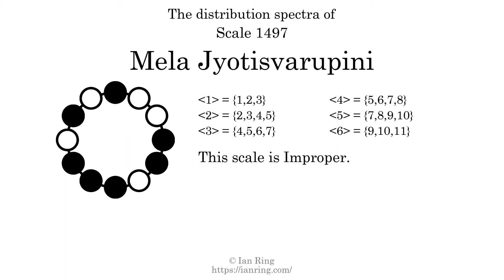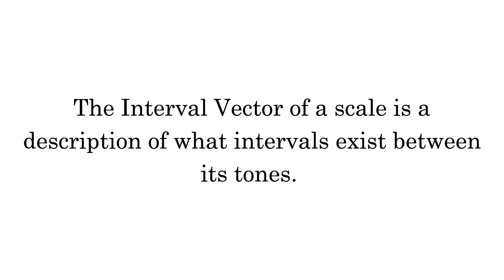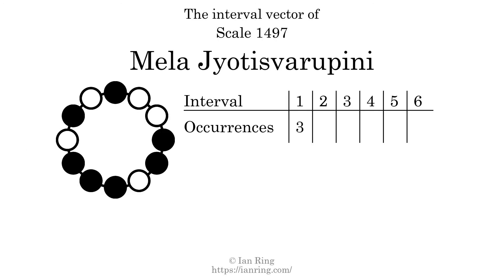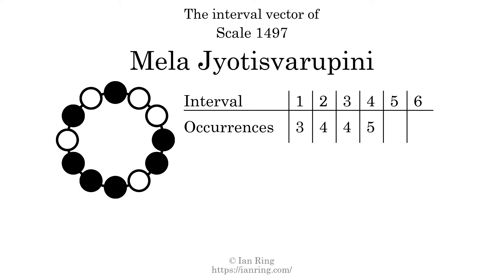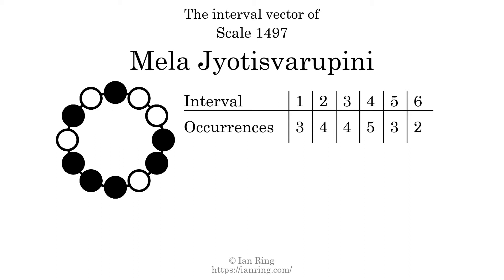Since the generic interval ranges overlap, this scale is an improper scale. The interval vector of a scale is a description of what intervals exist between its tones. There are 3 intervals with a size of 1 semitone, 4 intervals with a size of 3 semitones, 5 intervals with a size of 4 semitones, 3 intervals with a size of 5 semitones, and 2 intervals with a size of 6 semitones. Each interval does not appear a unique number of times, so this is not a deep scale.